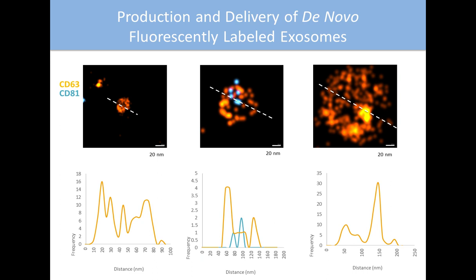Did you do sucrose gradient ultracentrifugation? A sucrose gradient is a great way to cushion exosomes during ultracentrifugation. We prefer antibody-based selection of exosomes rather than sucrose-based selection because we really want to ensure that viruses and exosomes are kept separate. The density of an exosome, microvesicle, and virus are pretty similar — you can separate them on carefully prepared sucrose or iodixanol gradients — but we prefer to go straight toward antibody-based capture to be fairly certain we're not contaminating with viral particles.